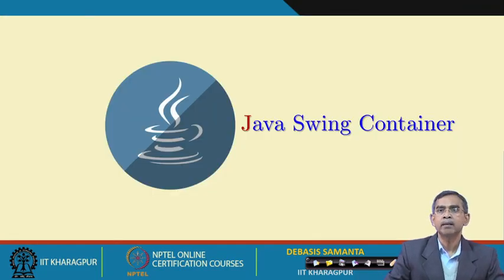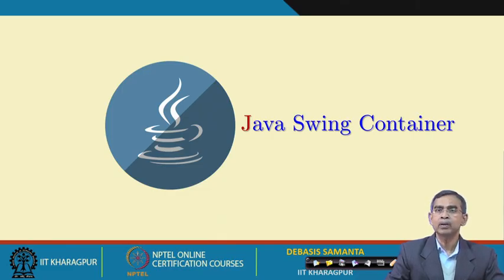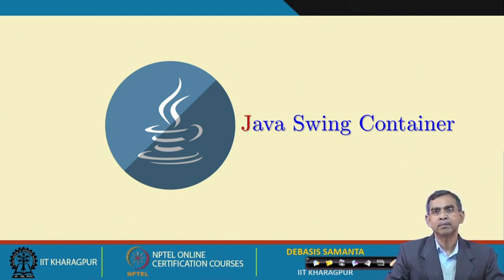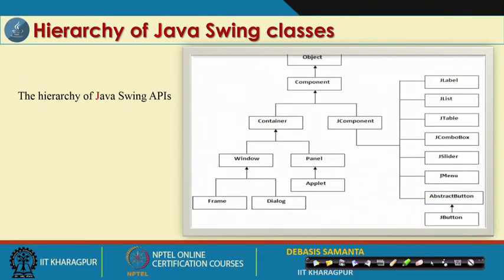Now let us look at container classes. The components covered include frame, panel, dialog box, and applet. So far containers are concerned, the container includes window, panel, frame, dialog, and applet. Components can be added into an applet just as discussed in the AWT section. These are all the containers in Java Swing, and all of them exist in AWT as well — Swing just adds better look and feel.